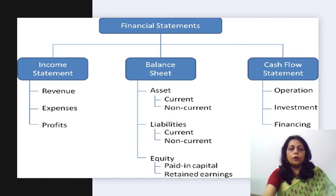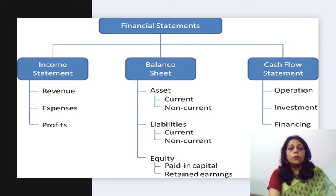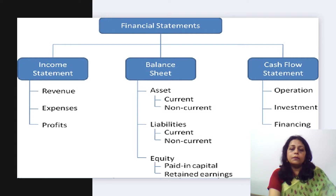This is an overview of the financial statements. The income statement is categorized into revenue, expenses, and profits. The balance sheet is categorized into assets, liabilities, and shareholders' equity. And the cash flow statement is categorized into operating, investment, and financing activities.